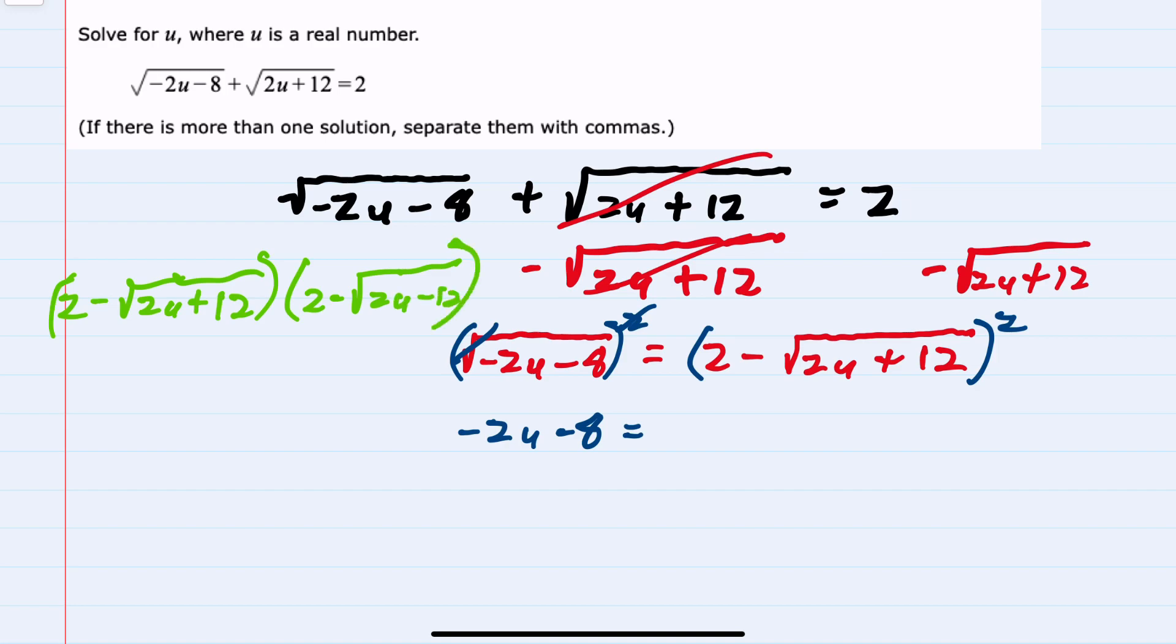When we do the multiplication we have 2 times 2 which is 4, and we'll have -2 times that radical, and then a second -2 times that radical, so -4 times the radical. Then finishing the distribution or the FOIL, negative times negative is positive, and √(2u+12) times √(2u+12) gives us 2u+12, with the radicals canceling.